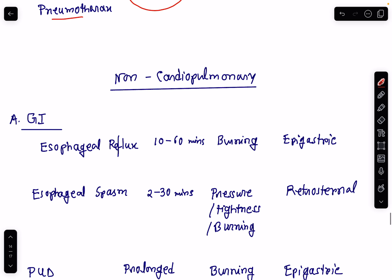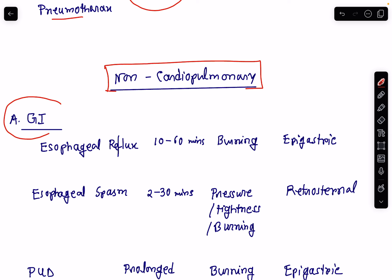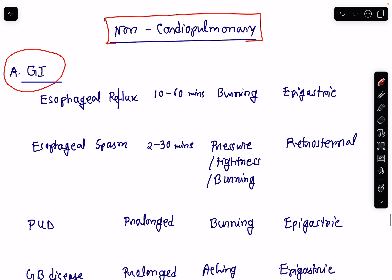Now let's talk about the non-cardiopulmonary causes of chest pain — first, gastrointestinal tract diseases. Esophageal reflux disease may also cause chest pain. The duration is typically 10 to 60 minutes. It is of burning type and the pain is usually in the epigastric or substernal region. It is usually associated with postprandial recumbency.